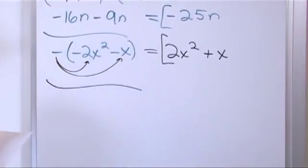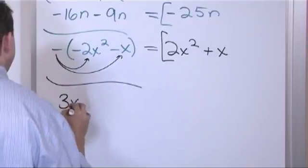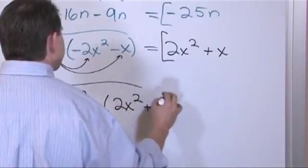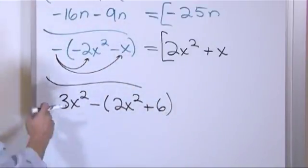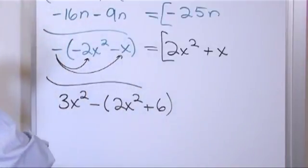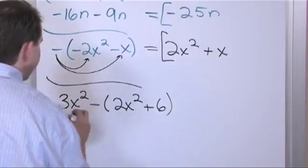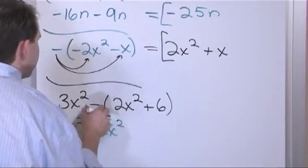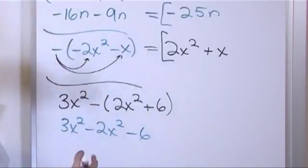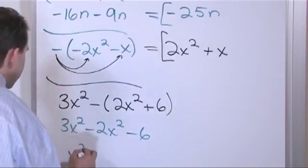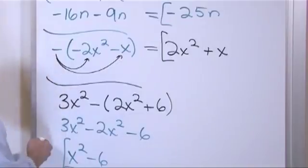It's really important to keep straight about like terms. What if you have 3 times (x squared minus 2x squared plus 6)? You want to see if you can collect like terms, but first you need to multiply. So: negative times 2x squared is negative 2x squared, negative times six is negative six. We have three x squared here, and we look for like terms: three minus two is one x squared. The answer is x squared minus six.